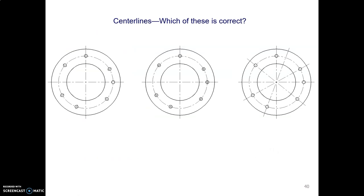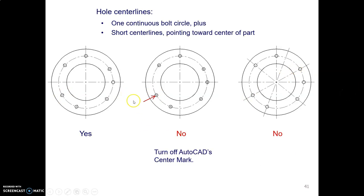Now, holes on a bolt circle. We have three different ways here, a little short line pointing at the center, little center marks, or long center lines. Which one do you like? Yes, this one on the left with the little short center lines pointing towards the center. The other two are bad.